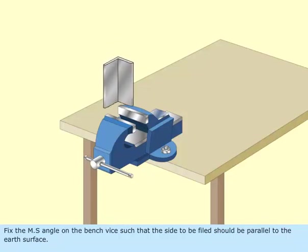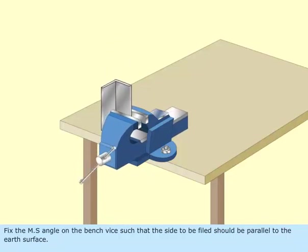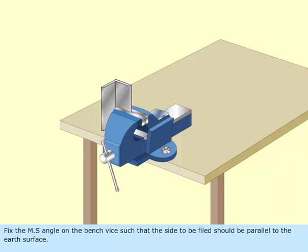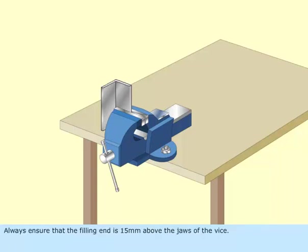Fix the MS angle on the bench vise such that the side to be filed should be parallel to the earth surface. Always ensure that the filing end is 15 mm above the jaws of the vise.